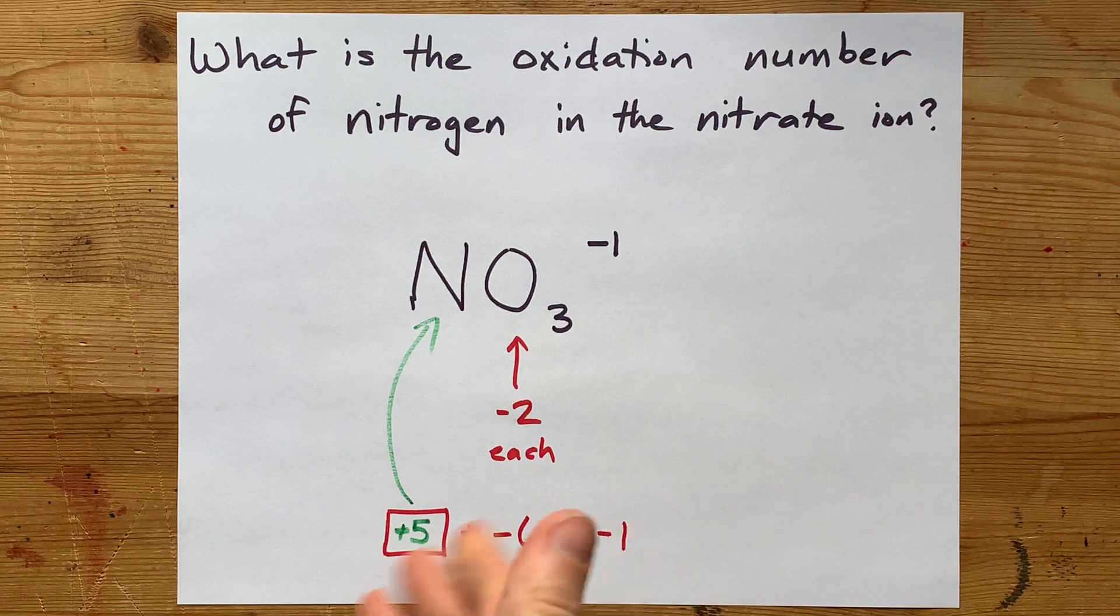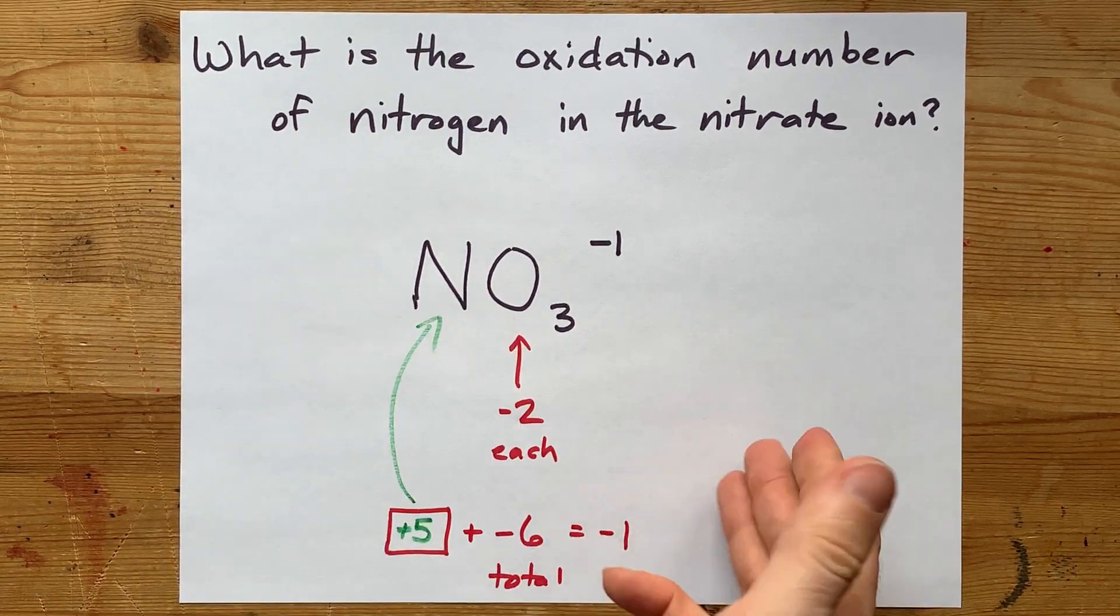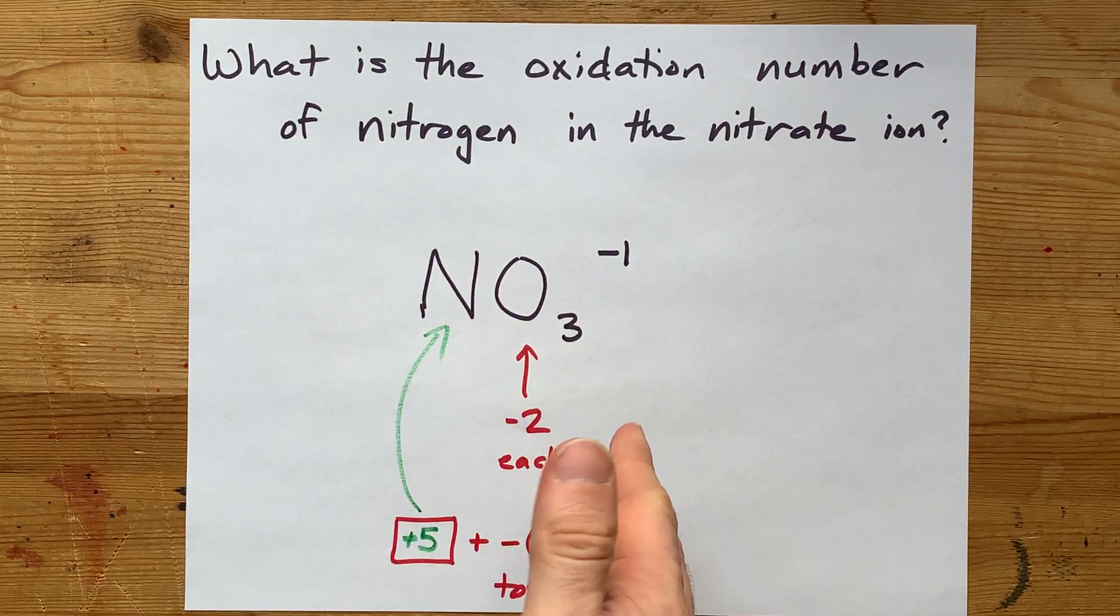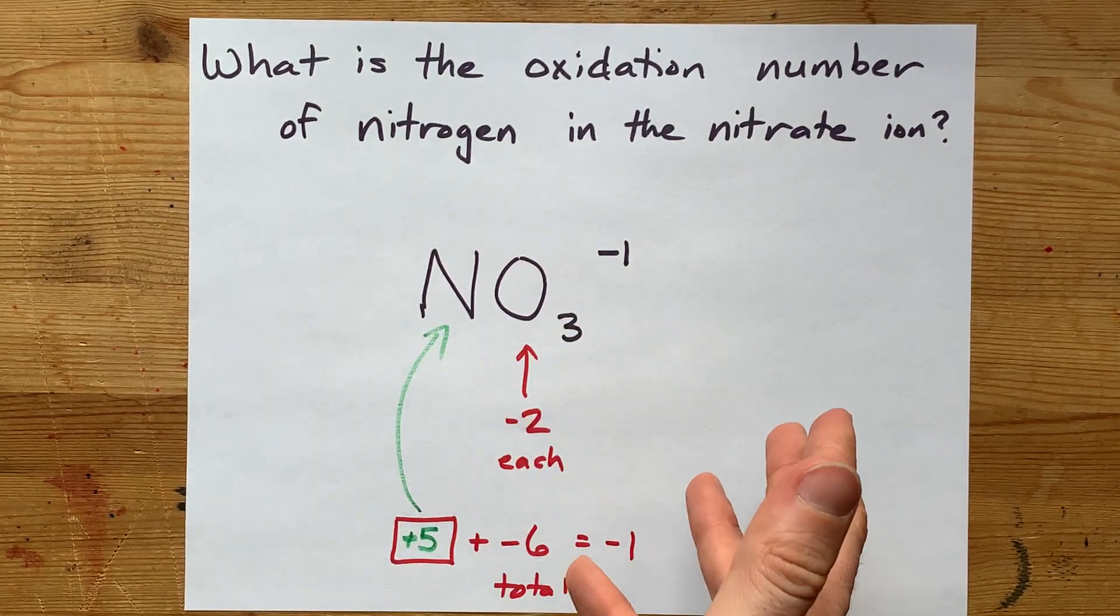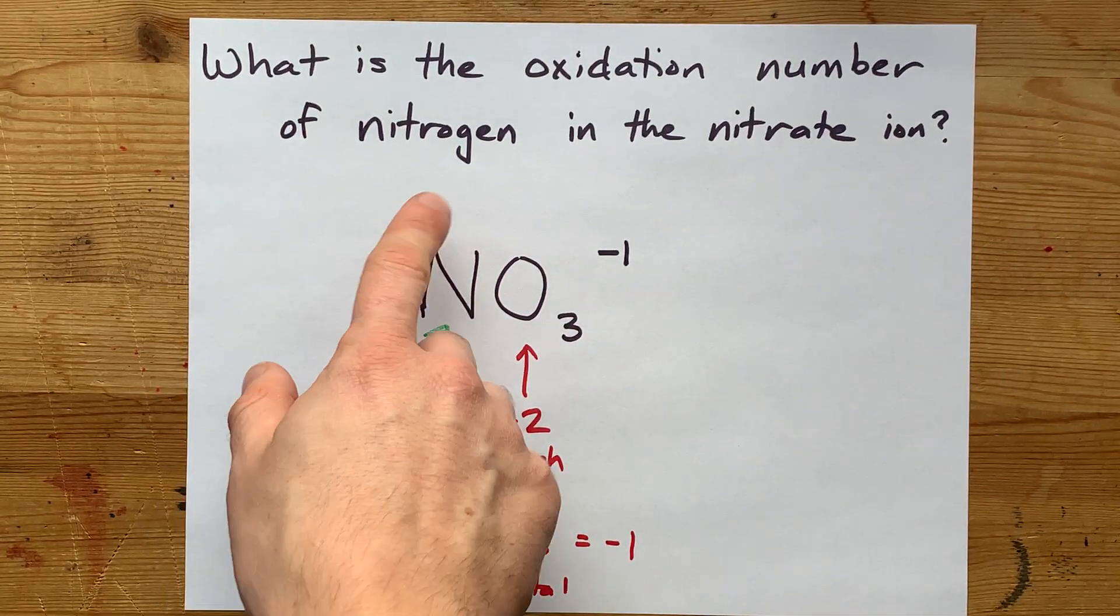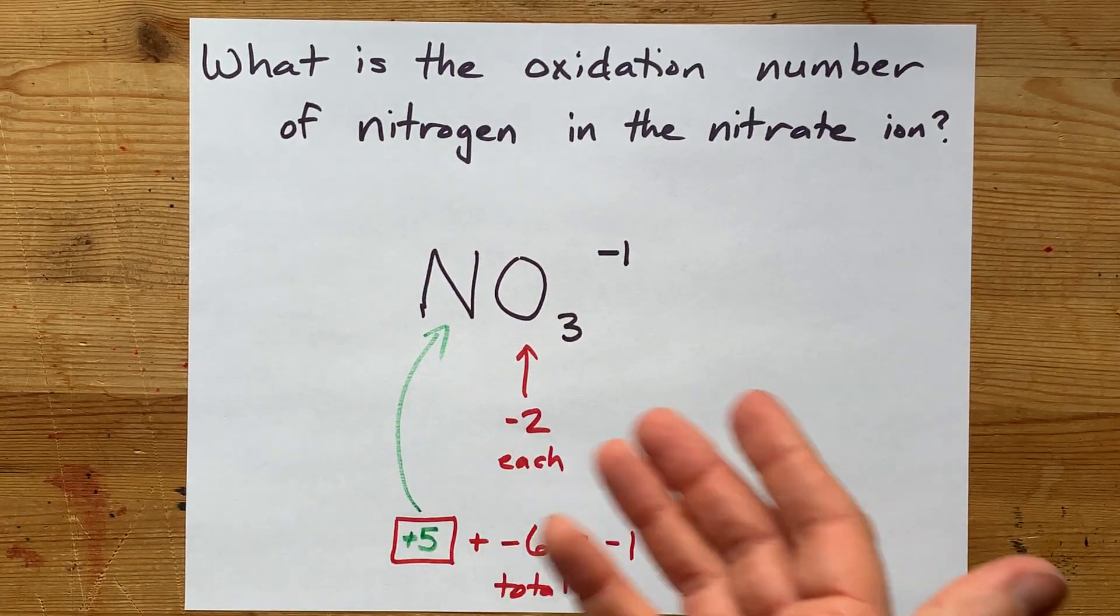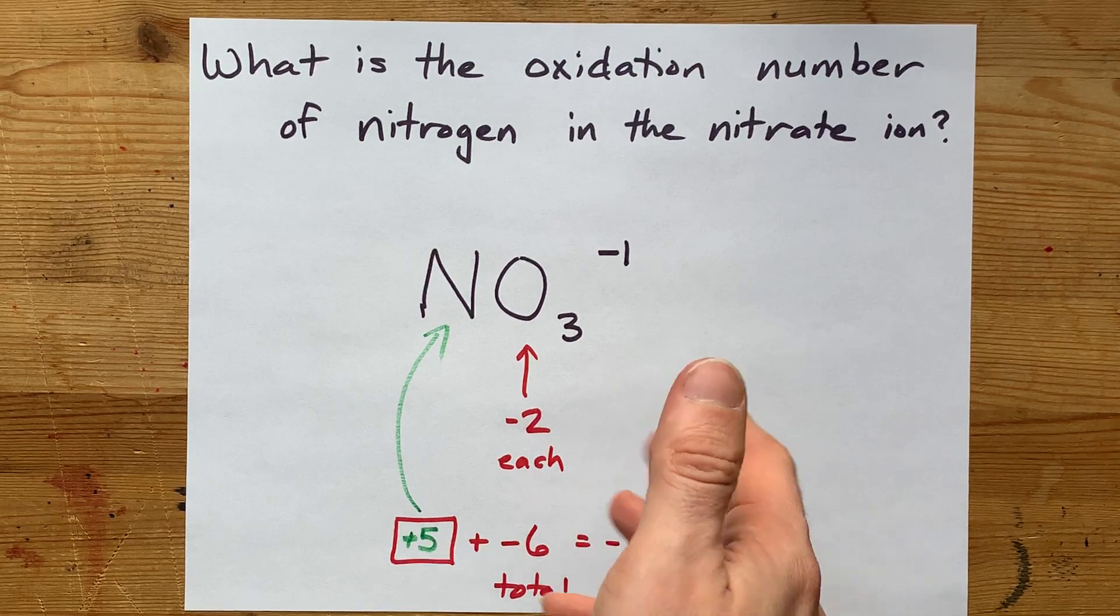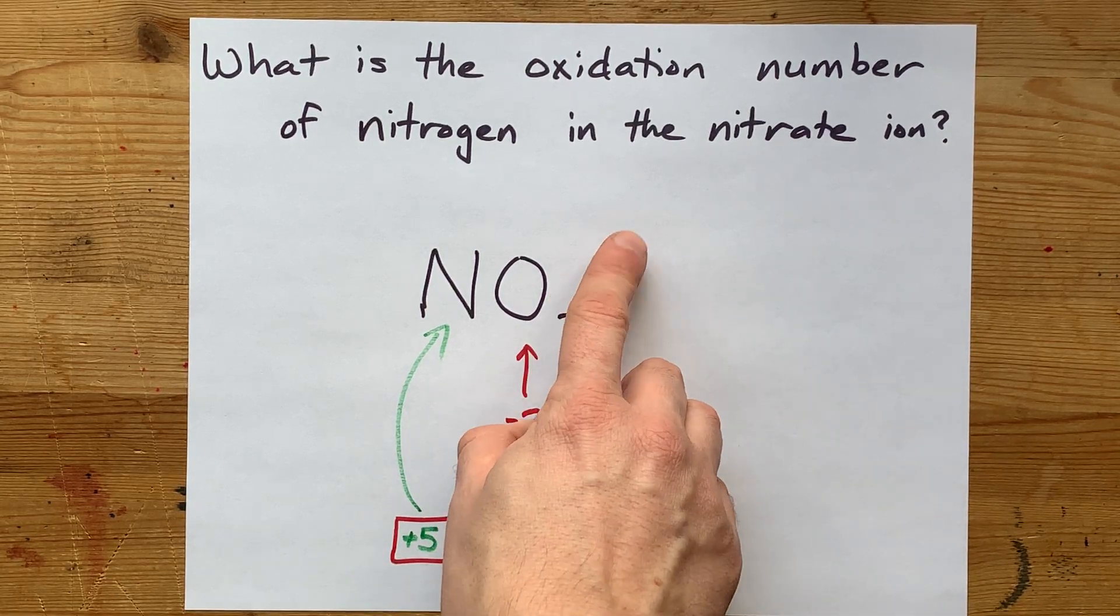There you go. Thanks for sticking with me as I showed you how we created it. The idea is that there are rules for what numbers to assign each element, and then in the end, the last elements usually take on whatever is required so that all of the oxidation numbers added together in the particle equals the overall charge.